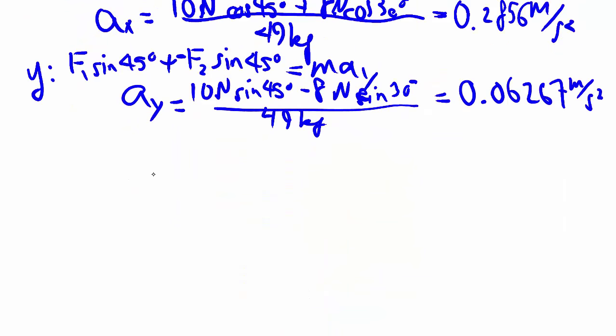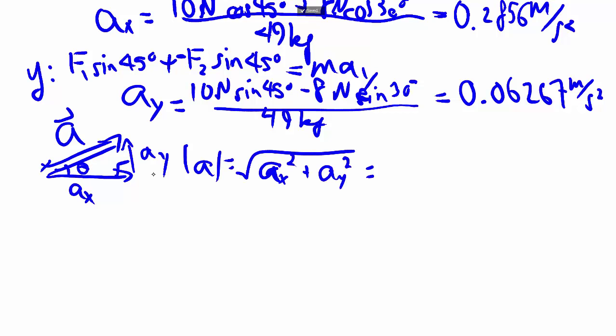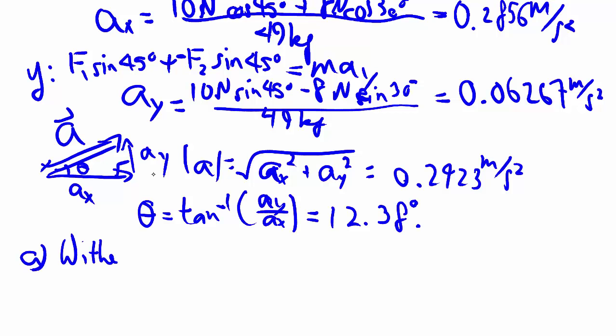So we can put it back together, and find the direction. Ax being positive, goes that way. Ay is a smaller positive, and goes that way. So we know my overall A goes in that direction, and we can find out the magnitude by Pythagoras, and the angle with inverse tangent. So we got part A done, without friction.